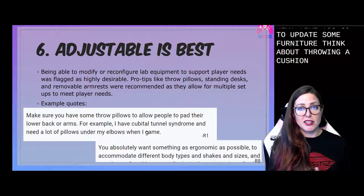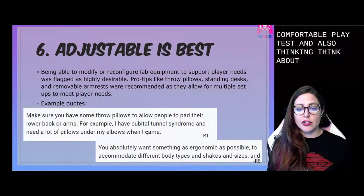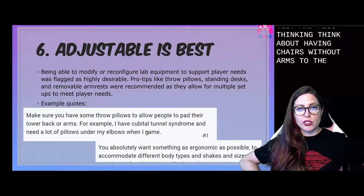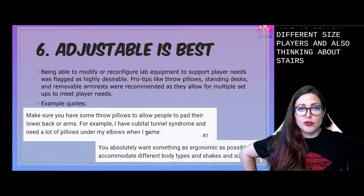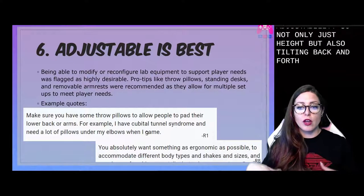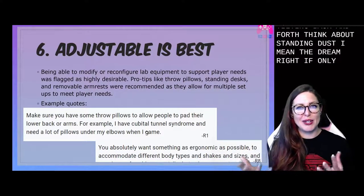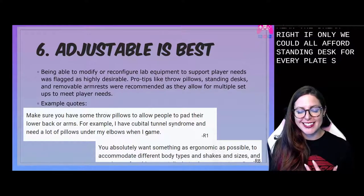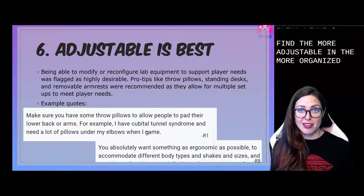You absolutely want something as ergonomic as possible to accommodate different body types, shapes, and sizes. Having adjustable furniture — like chairs with removable arms or office chairs without arms — helps for larger body types to fit comfortably in the chair. The next time you go to replace an office chair for playtesters or moderators, think about throwing a cushion onto the order. They're fairly inexpensive and make for a much more comfortable playtest. Also think about chairs without arms to support different sized players, and chairs which feature adjustability not only in height but also tilting back and forth. Think about standing desks — if only we could all afford standing desks for every playtest station. The more adjustable and ergonomic, the better.